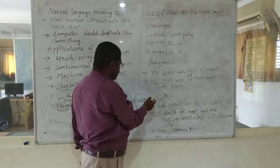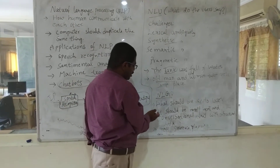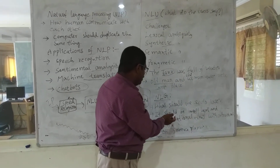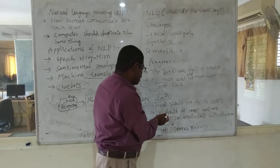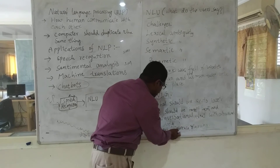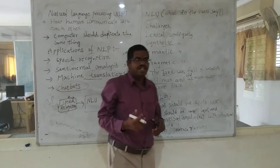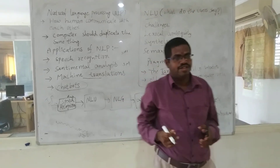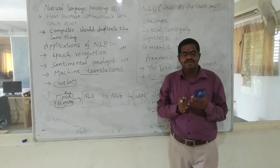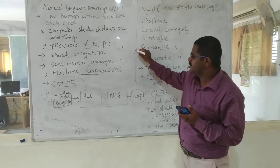Then we come to NLG — natural language generation — which is very important. Here we get the answer: what should we say to the user? It should be intelligent and conversational. It involves data selection, text planning, and sentence planning. For example, if I want to know the weather report for next week, I search on Google and it will approximately say 28 Celsius or something — we get all that information.